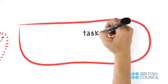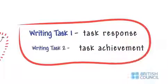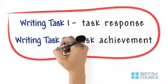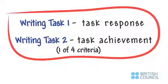Here, we look at the criteria of task response for writing task 1 and task achievement for writing task 2. These represent one of four criteria on which you will be tested. Look for the other three criteria in other videos.